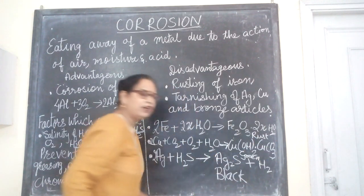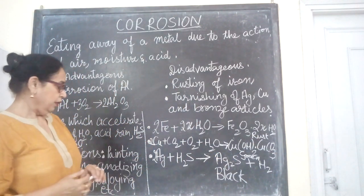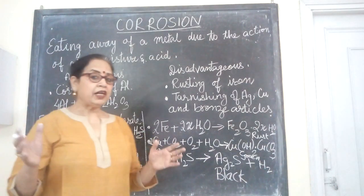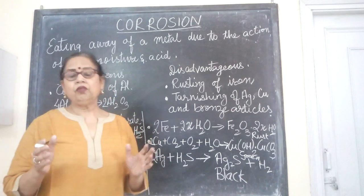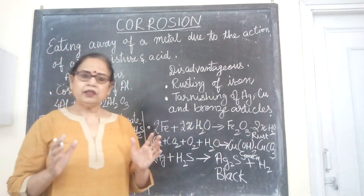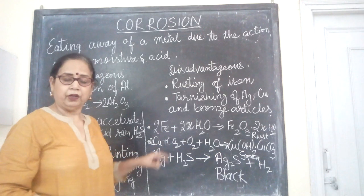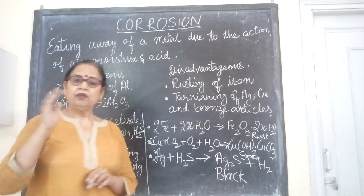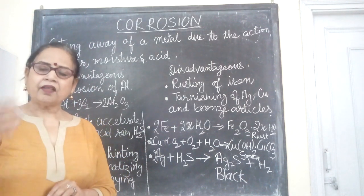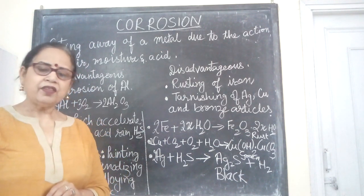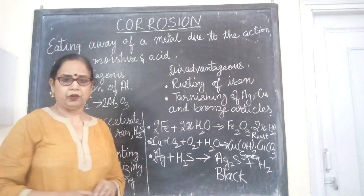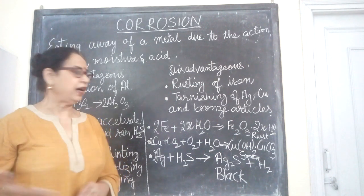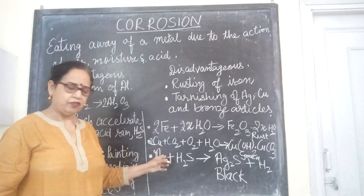Rust is an orangish flaky substance. The corrosion of copper is also very serious because the coils of ACs and refrigerators are made of copper. The pipes start leaking and gas has to be filled up every season because of copper corrosion. There are micro holes in the pipes which lead to leakage of gas, so corrosion is clearly disadvantageous.